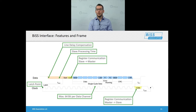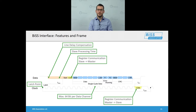This is why we call it a bi-directional interface — the control data communication. One bit of control data is transmitted from master to slave and one bit from slave to master in each frame. There is also a control data frame which spans several typical process data frames. You can use this control data, for example, to perform register communication such as calibration of a sensor, configuration of a sensor, reading out the electronic data sheet of a sensor, or retrieving temperature data stored in the slave's memory.